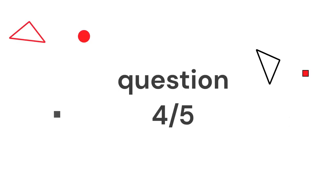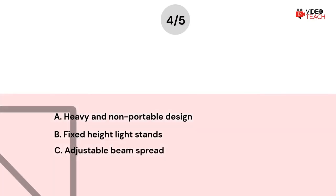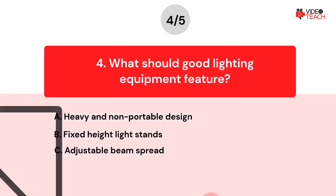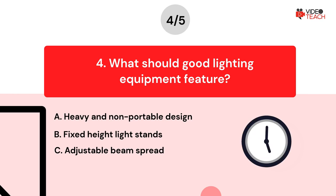Question number four. What should good lighting equipment feature? Option A: Heavy and non-portable design. Option B: Fixed height light stands. Option C: Adjustable beam spread. Now you have about 15 seconds to think about your answer.